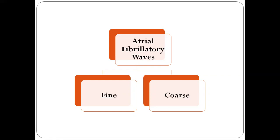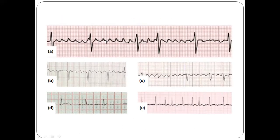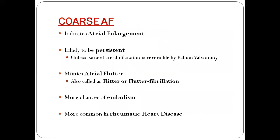Atrial fibrillatory waves are divided into two types: fine fibrillatory waves and coarse fibrillatory waves. In coarse AF, the F-wave amplitude is more than 1 mm — one small square on ECG. If the F-wave amplitude is less than 1 mm, then it is called fine AF. Here you can see the coarse AF, where the wave is occupying almost two small squares — more than 2 mm — so it is called a coarse fibrillatory wave. In fine AF, the fibrillatory waves are small and not even occupying one small square, so they are less than 1 mm — called fine fibrillatory waves.